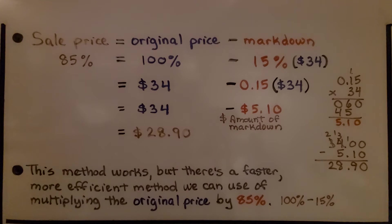Now, this method works, but there's a faster, more efficient method that we can use of multiplying the original price by 85%. 100% minus 15% is 85%. We just multiply the original price by 85%.